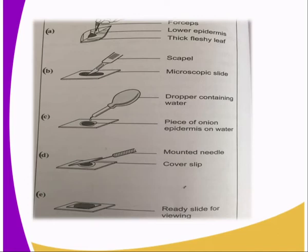From there, you repeat the procedure above with another epidermal strip, using a drop of dilute iodine solution instead of distilled water. The reason you should use iodine is that it is a colored stain and it stains the cells. From there, you are going to make a large, neat, well-labeled diagram drawing of two cells which you have already observed — one of them will be the control experiment.